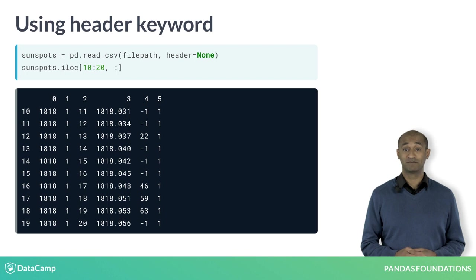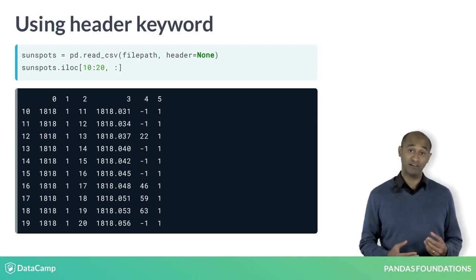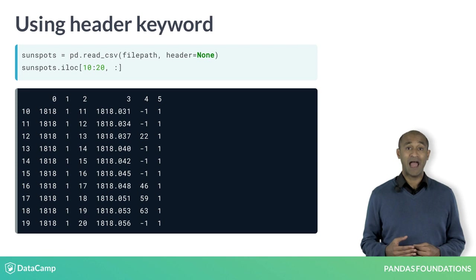Let's tidy this up. Using header equals none prevents pandas from assuming the first line of the file gives column labels. Alternatively, an integer header argument gives the row number indexed from 0 where column labels actually begin and the data begins. Notice now the columns and rows are assigned integers from 0 as labels.